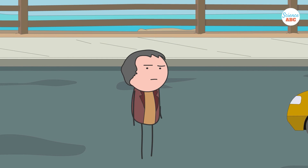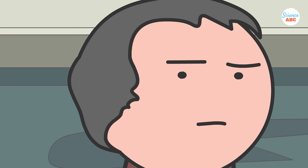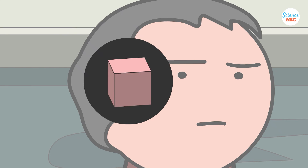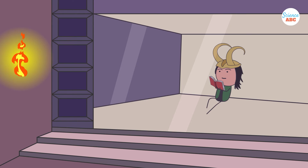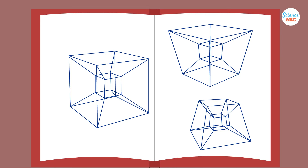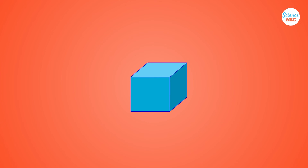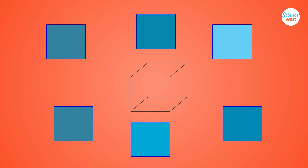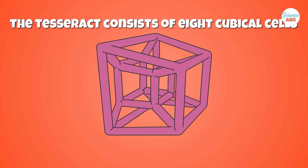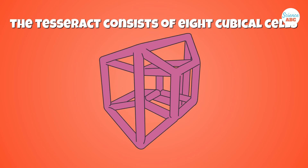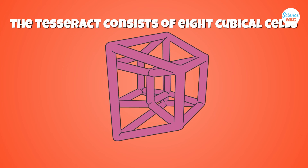However, just because we can't visualize a concept doesn't mean that it can't exist. Mathematically speaking, a Tesseract is a perfectly accurate and plausible shape, as are all shapes in higher dimensions, such as 5D and 6D. Just as a cube can be unfolded into six squares in two-dimensional space, a Tesseract can be unfolded into eight cubes in three-dimensional space.